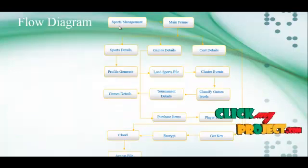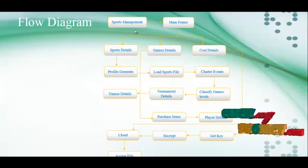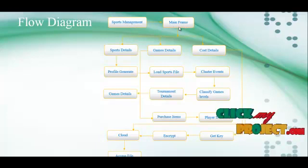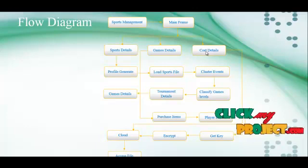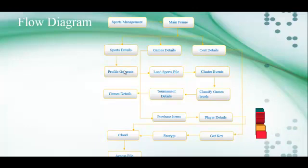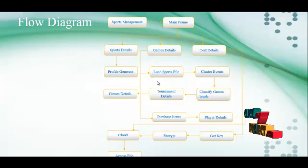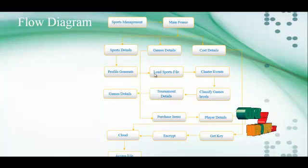This is the default diagram for the sports management system. First we initialize the process — describing what the sports management system is — then we come to the mainframe. The mainframe is divided into three parts: normal space details and the mainframe details. First of all, users get the login, which is called profile generation.